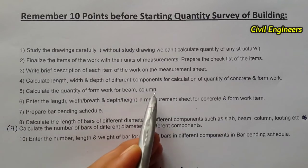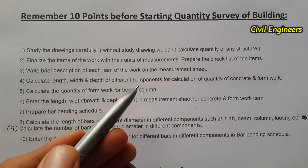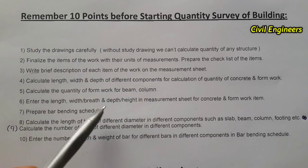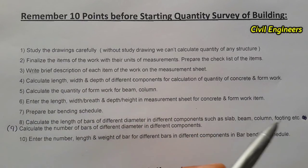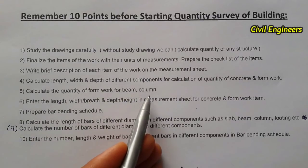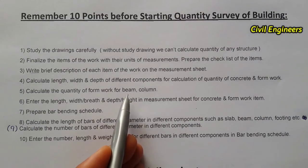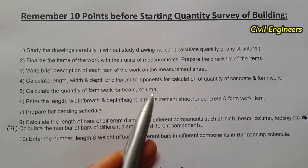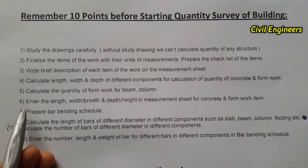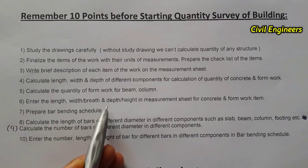The fifth point is to calculate the quantity of formwork for beams and columns. Many people find the quantity of a structure but sometimes forget the quantity of formwork for beams and columns, so keep this point in mind when finding the quantity of any structure in civil engineering.